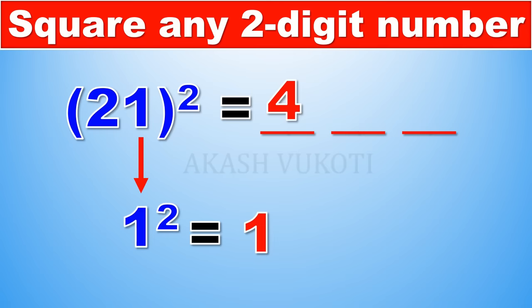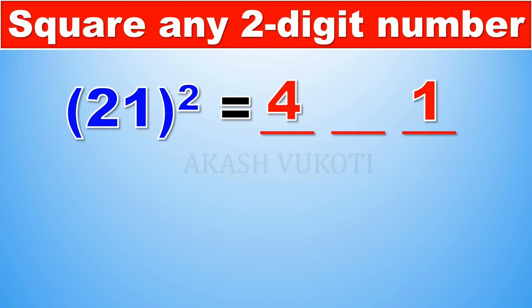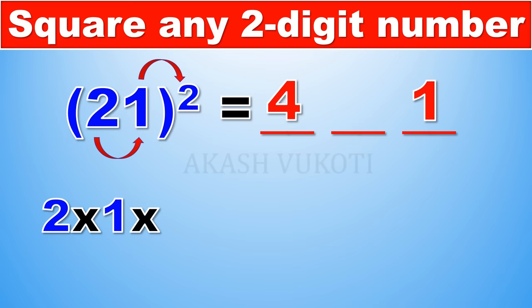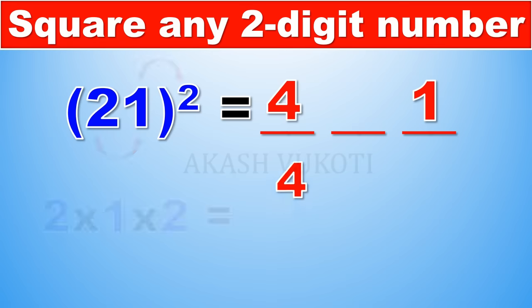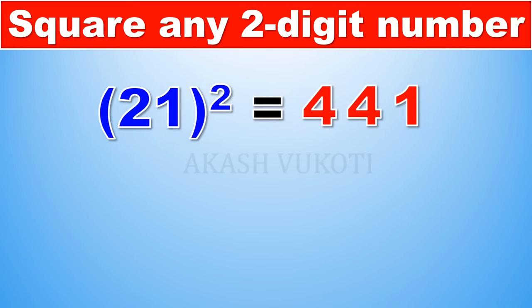The middle part is the product of the two digits of the original number times 2. For 21, that's 2 times 1 times 2, which equals 4. Now put all three parts together: the first part is 4, the middle is 4, the last part is 1 — so 21 squared equals 441.